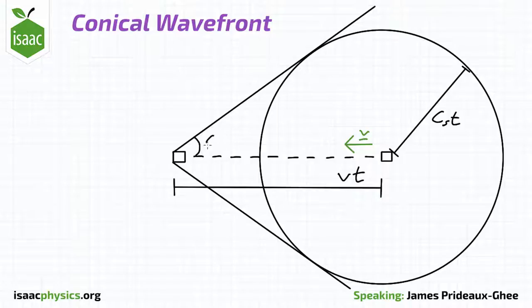The half angle of the cone is labelled theta. Try to think about how to use trigonometry to derive an expression for theta in terms of the quantities in the diagram.